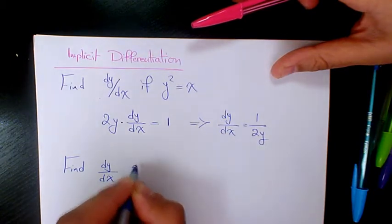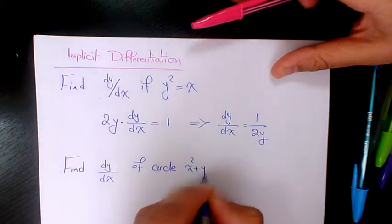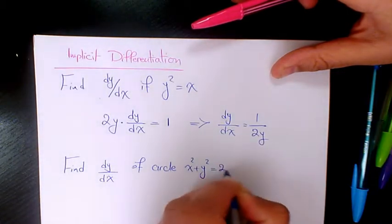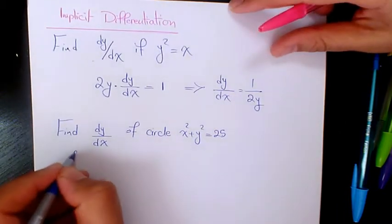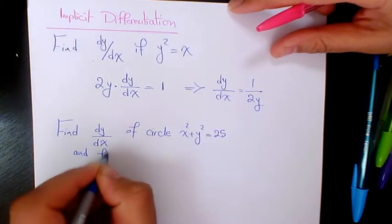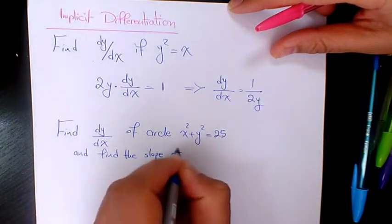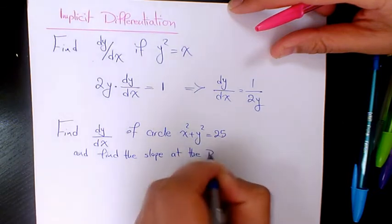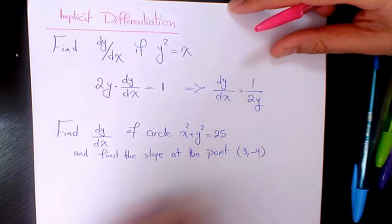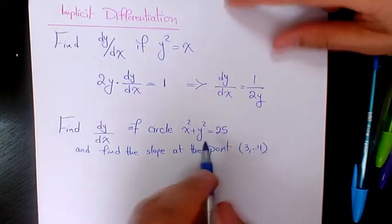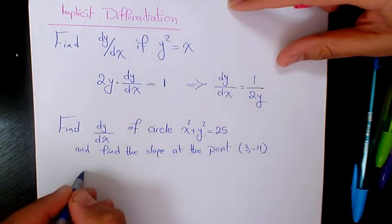Next example: find dy/dx for the circle x² + y² = 25, and find the slope at the point (3, -4). So here the function is x² + y² = 25.